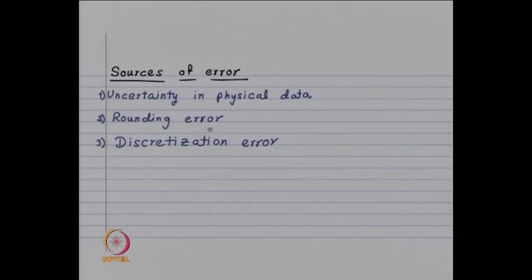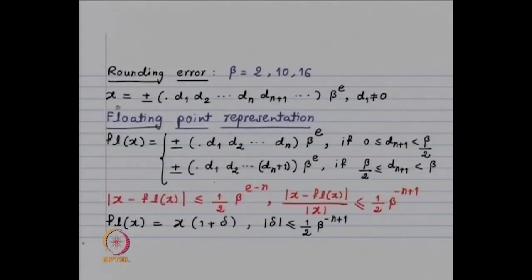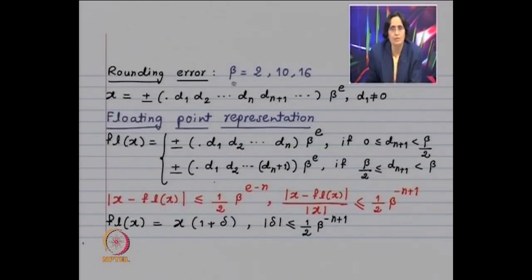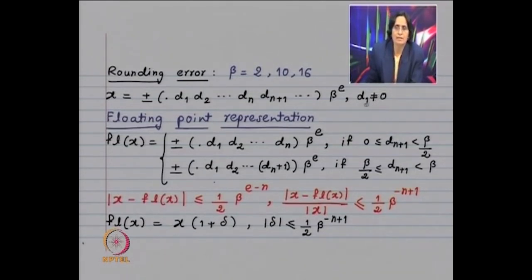Let us look first at the rounding error. A real number has a representation to the base beta, where beta is either 2, 10, or 16. These are the generally used values of beta on a computer. A real number x is of this form, where as a normalization, one assumes that d₁ is not equal to 0. It is always possible to do such a thing for a non-zero number, because you can adjust the exponent.